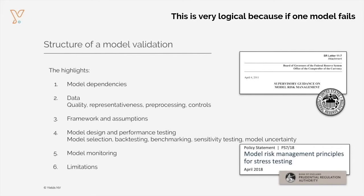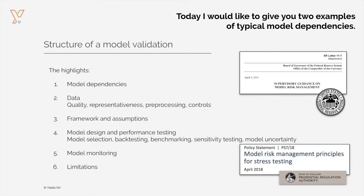This is fairly logical because if one model fails, it will automatically have impact on all the downstream models. Today, I would like to give you two examples of typical model dependencies.